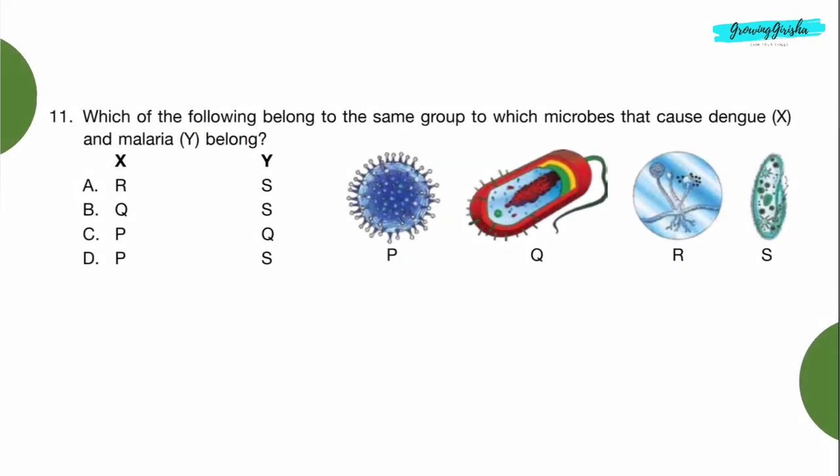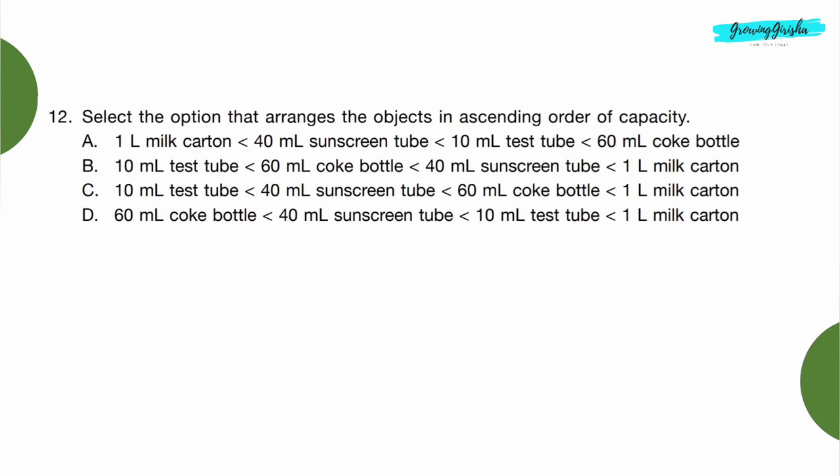Question 11: Which of the following belong to the same group to which microbes that cause dengue X and malaria Y belong? Dengue is caused by virus P and malaria is caused by protozoa S, so Option D is the correct answer. Question 12: Select the option that arranges the objects in ascending order of capacity. In Option A, one liter is greater than 40 ml, so Option A is incorrect. In Option B, 10 ml test tube is less than 60 ml Coke bottle but it is greater than 40 ml sunscreen, so this is also incorrect. 10 ml is less than 40 ml, 40 ml is less than 60 ml, and 60 ml is less than 1 liter, so Option C is the correct answer.